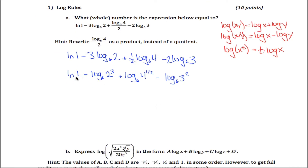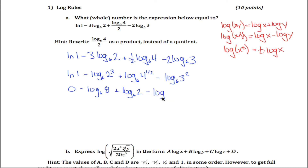The natural log of one is just zero — the reason is it's asking to what power must you raise e to make it equal to one, and e raised to the zero power equals one. This simplifies to the log base six of eight, since eight is two to the third power. Then log base six of two, because the one-half power is the square root and the square root of four is two. And log base six of nine, because three squared is nine.